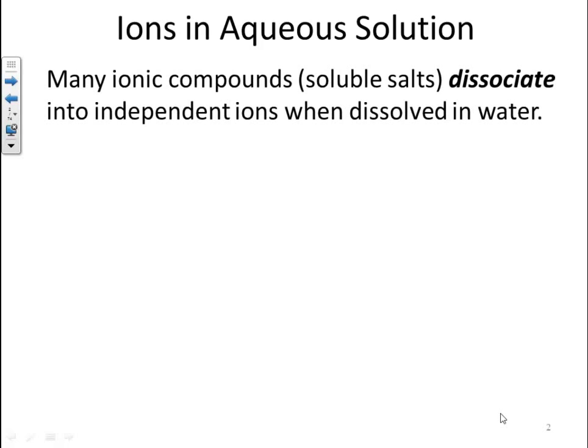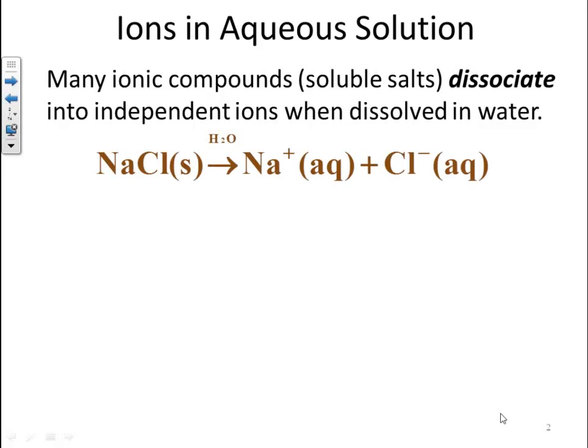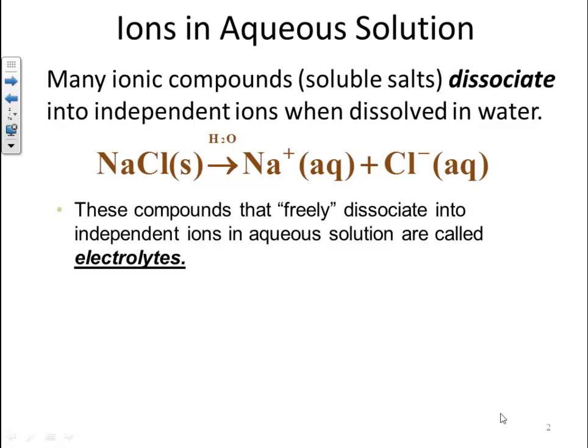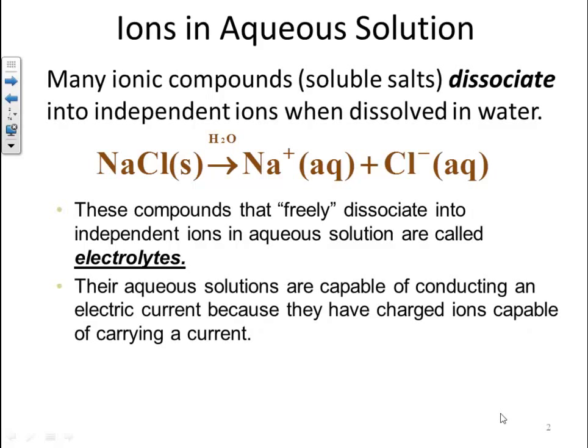Many ionic compounds, meaning soluble salts, dissociate into independent ions when dissolved in water. For example, sodium chloride, which is a soluble solid, placed in water is going to dissolve into its ions until it reaches its saturation point. These compounds that freely dissociate into independent ions in aqueous solutions are called electrolytes. The aqueous solutions are capable of conducting an electric current because they have charged ions capable of carrying a current.